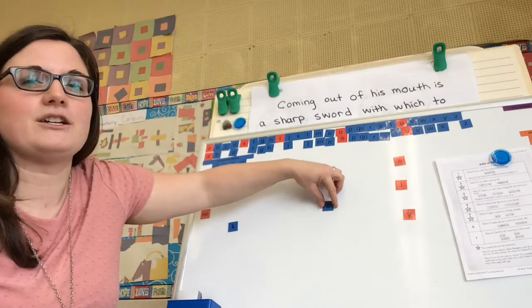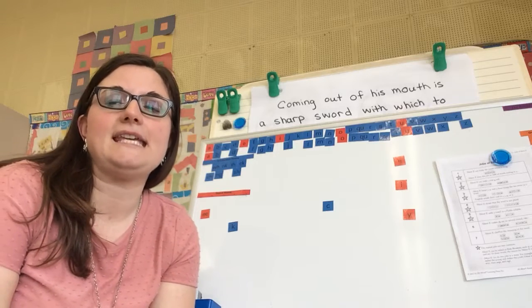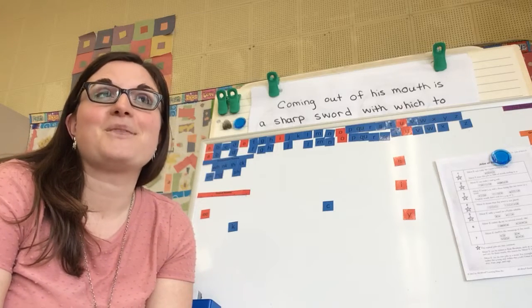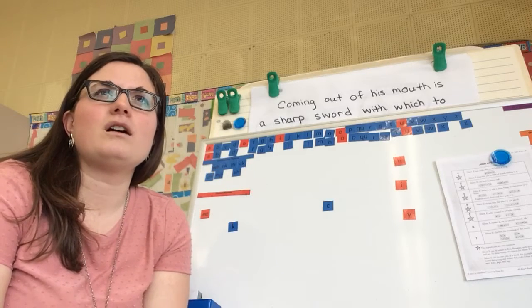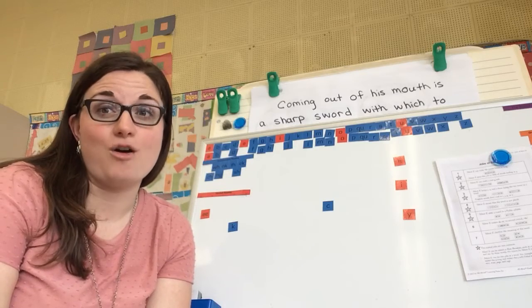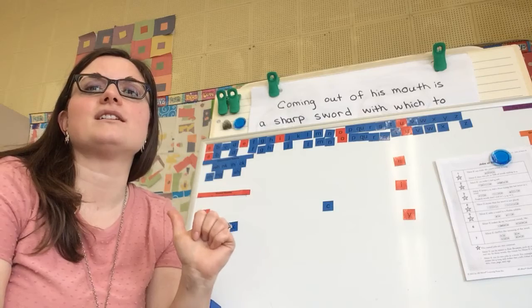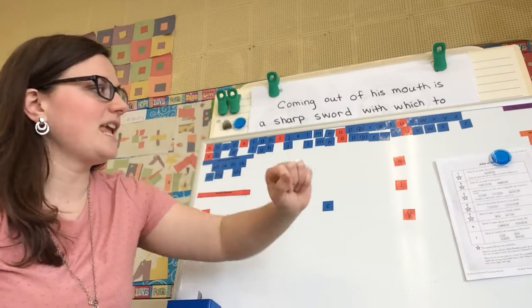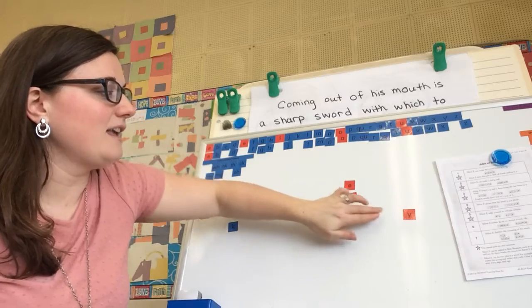But what I want to start with is the letter C. Now, can you remember the sounds that the letter C can make? Right, it can make a K or an S. Now, there is actually—I'm going to let you guys in on a secret—there's a trick to know whether the C is going to say K or it's going to say S. And the trick is with E, I, and Y.